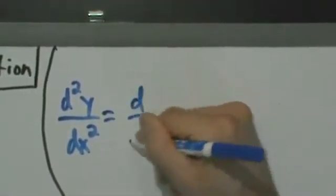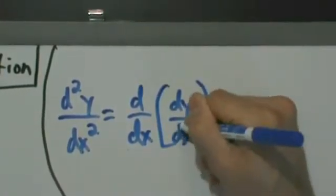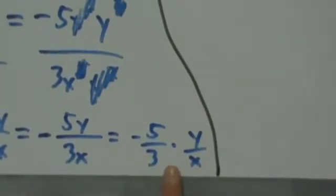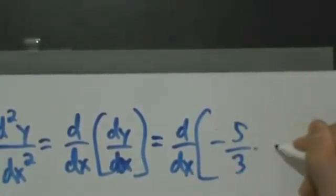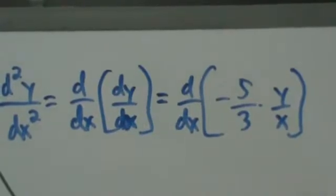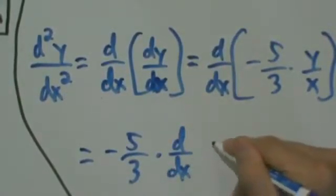d²y/dx² equals d/dx of (dy/dx). The second derivative is the derivative of the first derivative. Since dy/dx is negative 5/3 times y/x, we write d/dx of negative 5/3 times y/x. Negative 5/3 is a constant being multiplied, so we pull it out: equals negative 5/3 times d/dx of y/x.